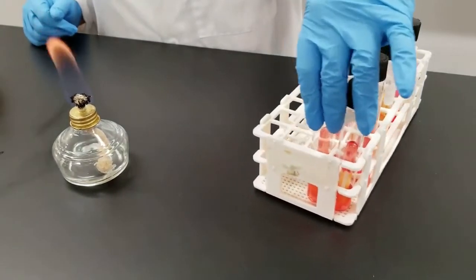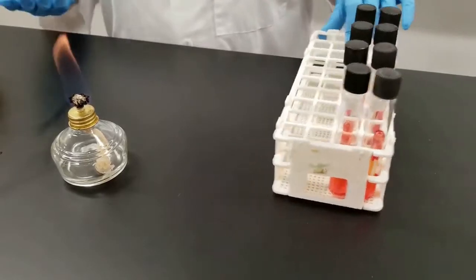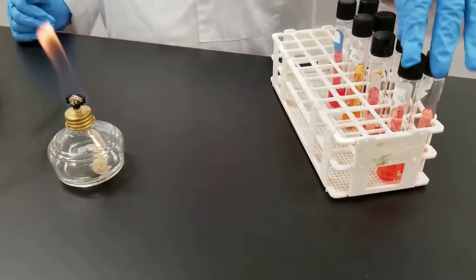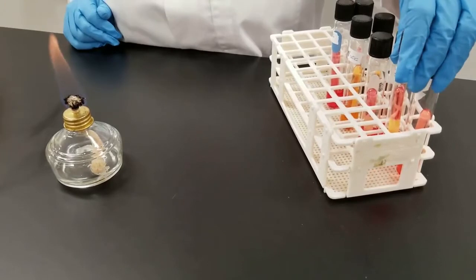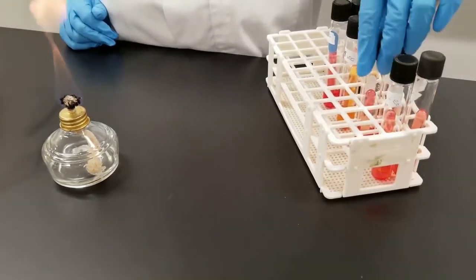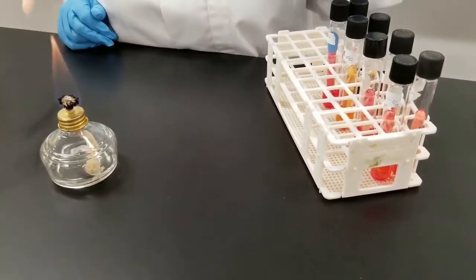So we have four different sugars. They look the same pretty much in the tube so you can't just go by looking, you need to watch your labels. We have glucose, lactose, maltose, and sucrose.